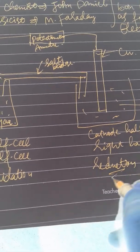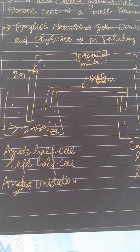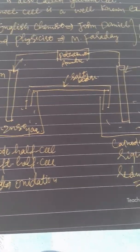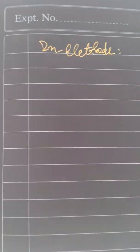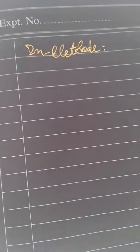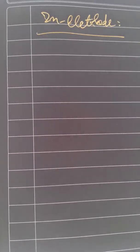At the cathode, reduction takes place. In this electrochemical cell, oxidation occurs at the anode — the zinc electrode — and reduction occurs at the cathode — the copper electrode. Any electrode can be used, but in this example, zinc is the anode and copper is the cathode.